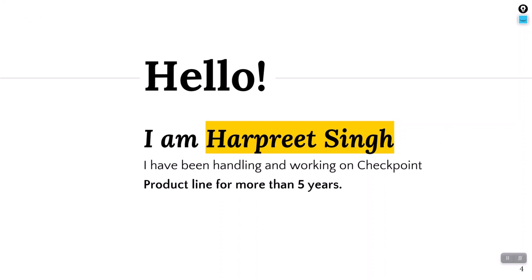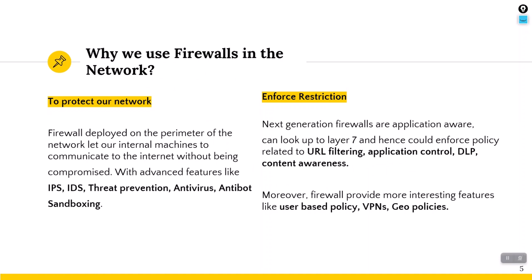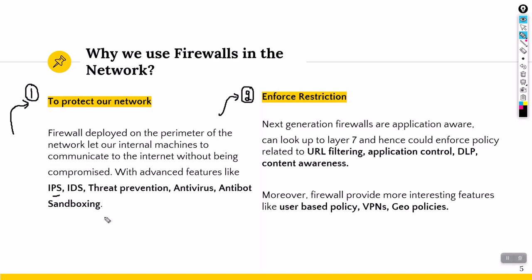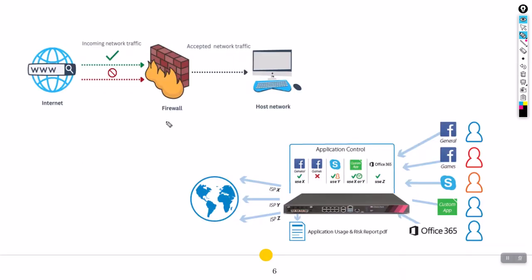The very first question is: why do we deploy firewalls in our network? There are two main reasons. First, I want to protect my network. Firewalls have features like IPS, IDS, threat prevention, antivirus, anti-bot, and sandboxing. Second, I want to enforce restrictions. To understand these two points through diagrams — we know that we deploy firewalls as the perimeter device.